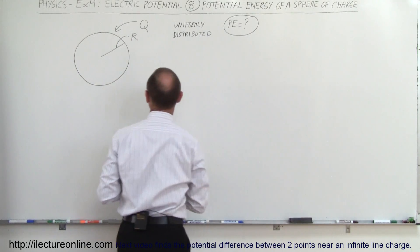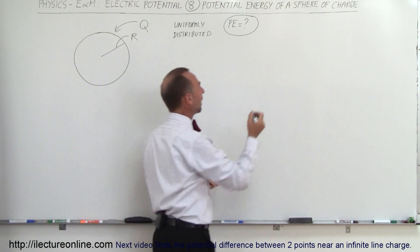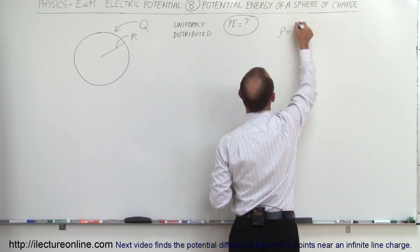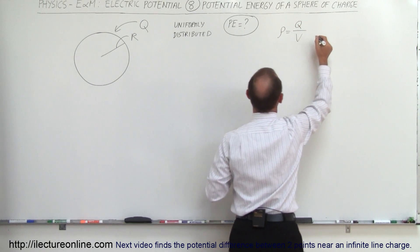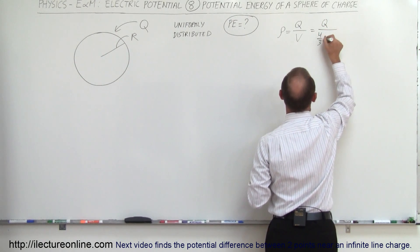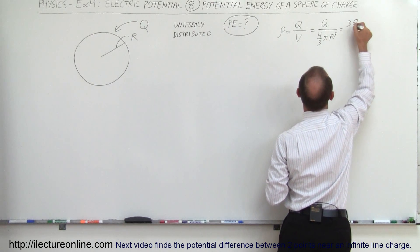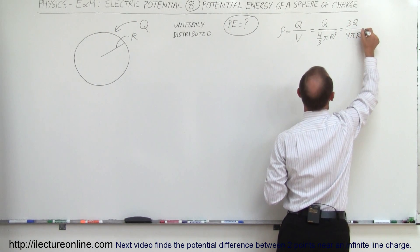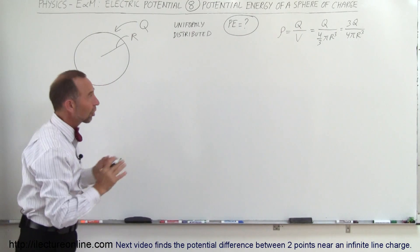First, it helps to find the charge density in the sphere. The density is equal to the total charge Q divided by the volume of the sphere, which is Q divided by (4/3)πR³, which equals 3Q divided by 4πR³, where R is the radius of the sphere. That's the charge density.